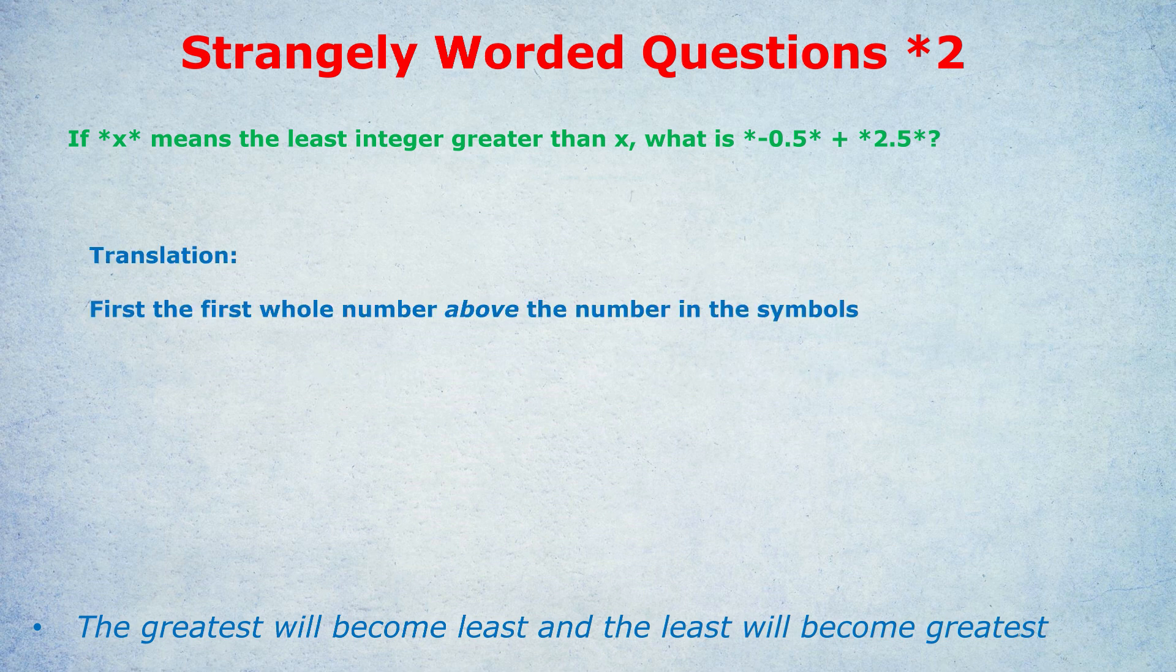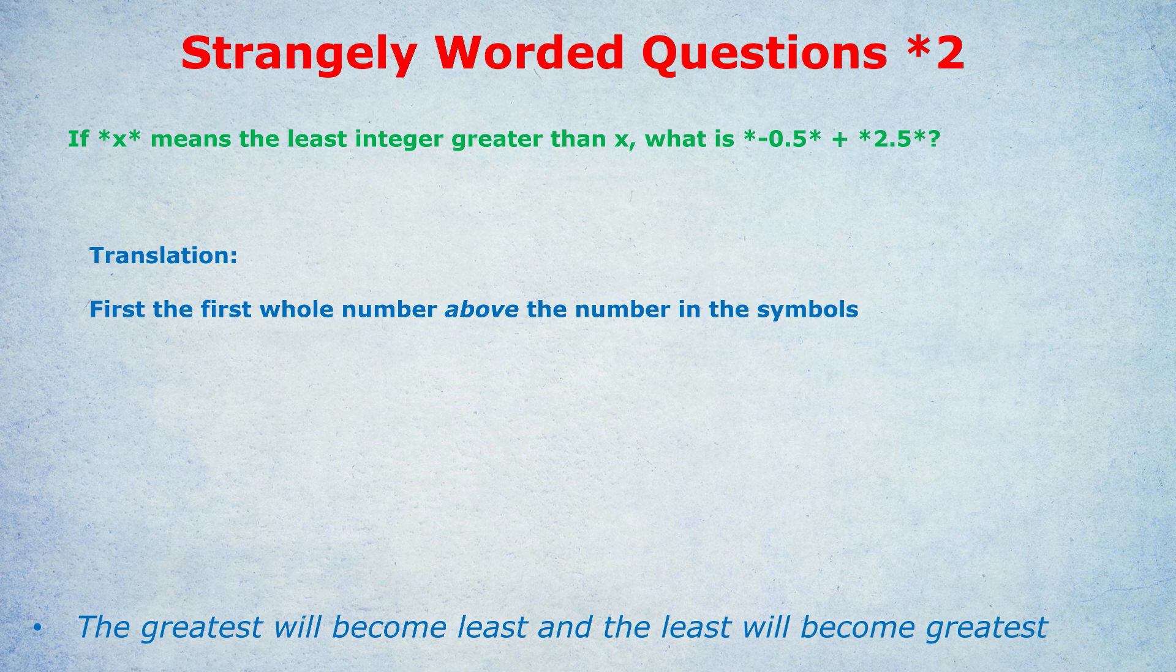How can we translate that? Well, the greater than x bit means that the number has to be above the x. Because greater than means we need to be higher on the number line than our number. What about the least integer bit? That just means it's the first integer greater than x.